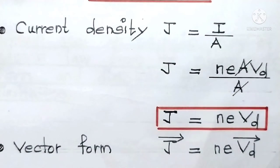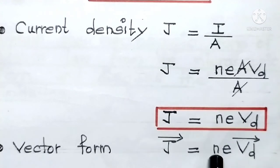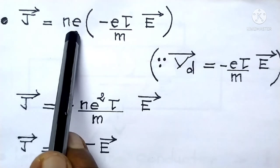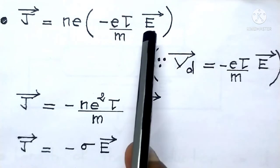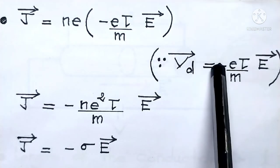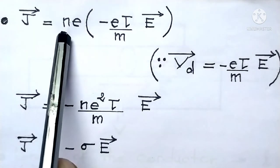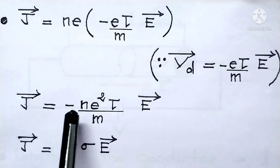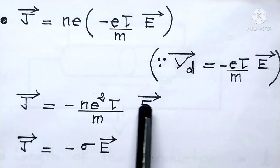Now let us write it in vector form: J⃗ = n · e · Vd⃗. The expression for drift velocity is Vd⃗ = -(e · τ / m) · E⃗. Substituting this in, n · e multiplied by e gives e squared, so J⃗ = -(n · e² · τ / m) · E⃗.